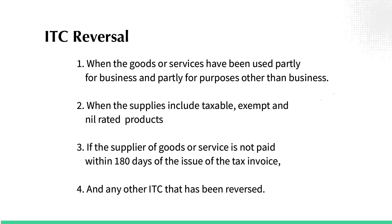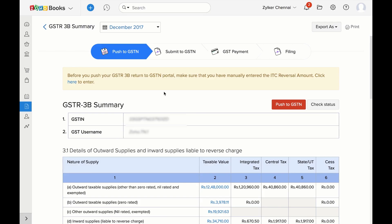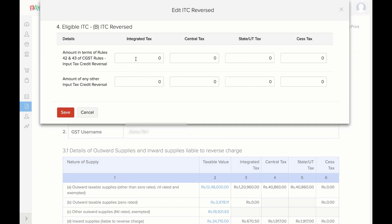As per Rules 42 and 43 of CGST rules, input tax credit must be reversed in the following cases: when the goods or services have been used partly for business and partly for purposes other than business; when the supplies include taxable, exempt and nil-rated products; if the supplier of goods or service is not paid within 180 days of the issue of tax invoice; and any other ITC that has been reversed. If there's ITC Reversal, please edit and give the details before pushing your data.